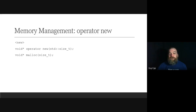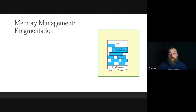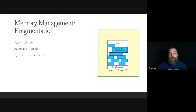Once operator new has secured storage, the constructor is invoked to create a new instance of the object at the returned address. Memory used for static storage is consumed at startup and released at shutdown. Memory for automatic storage is consumed from the stack for the duration of a block scope and released at the end — memory is released in reverse order of allocation, which is deterministic. But this is not the case for dynamic storage, whose duration is conditional on program execution. Since objects are not destroyed in reverse order of construction, we can get fragmentation.